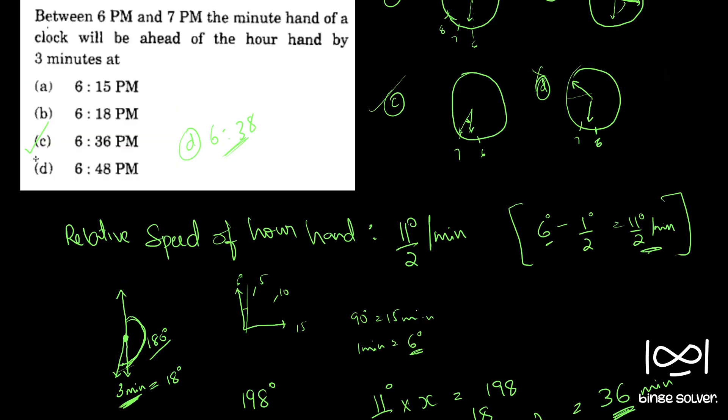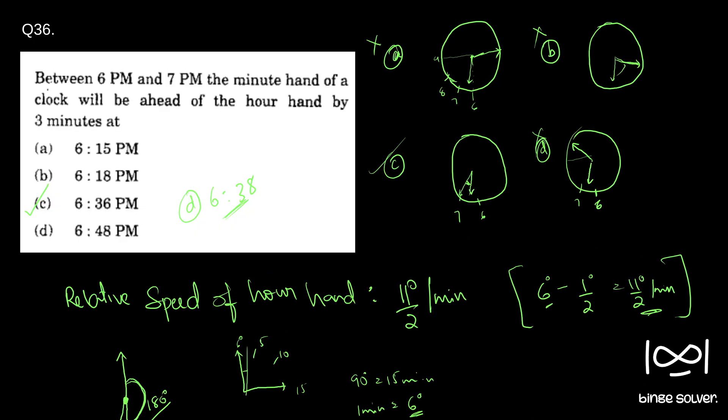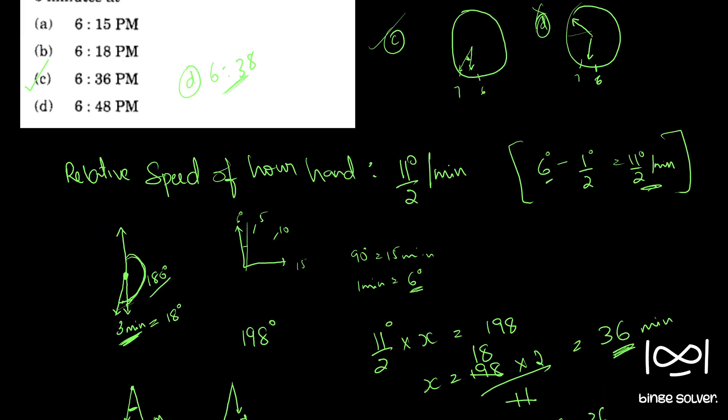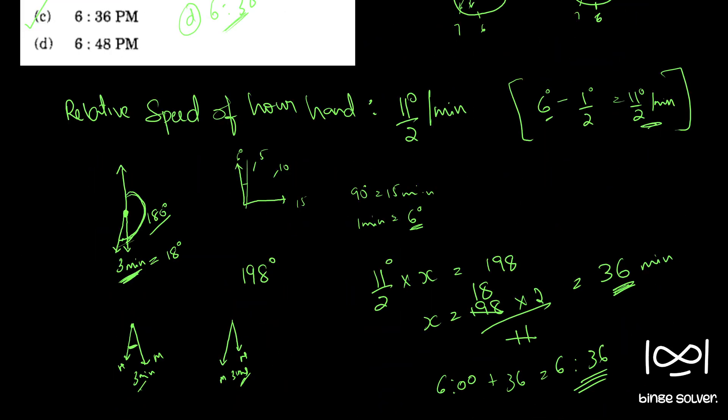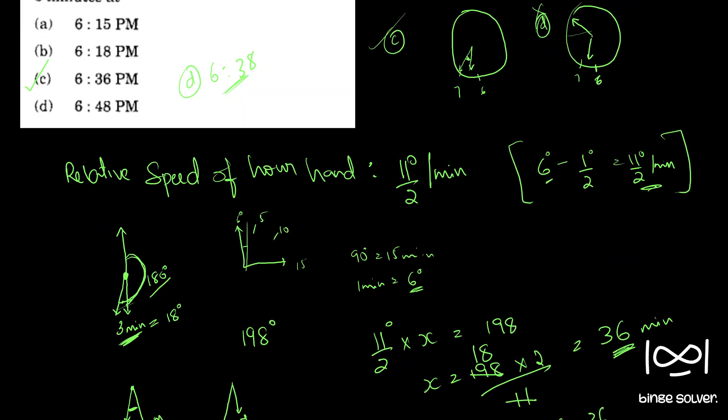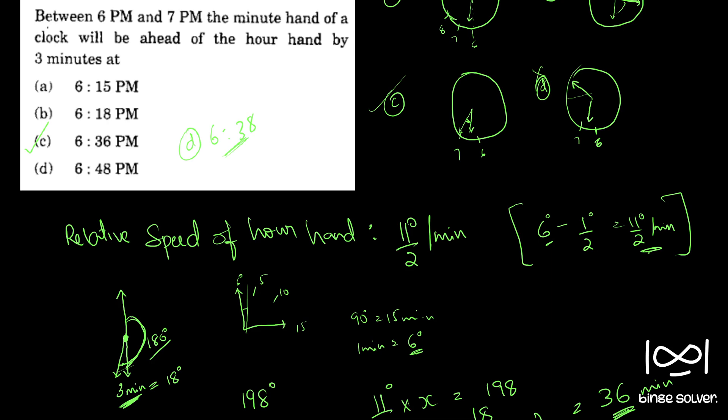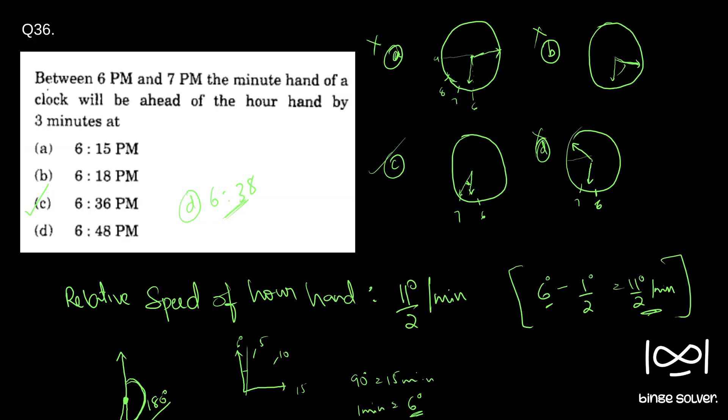We started from 6 o'clock, and after 36 minutes we reach the point where there is a 3-minute difference, so the answer is 6:36. This is the precise, correct answer. So C is the correct answer — this is how we solve such questions using the relative speed concept.